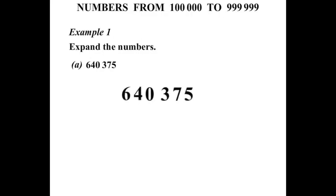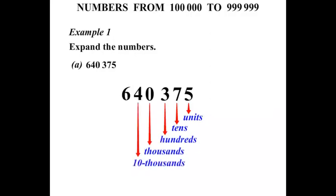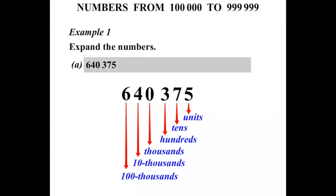Let's look at Example 1. We're asked to expand the numbers. The first number we have is 640,375. Let's write that down and consider each place value, starting from the right: Units, Tens, Hundreds, Thousands, Ten-Thousands, One-Hundred-Thousands. The 6 is worth 100,000, so we have 6 lots of 100,000. That's 600,000.